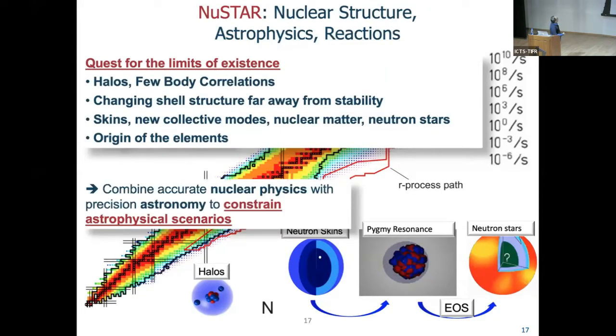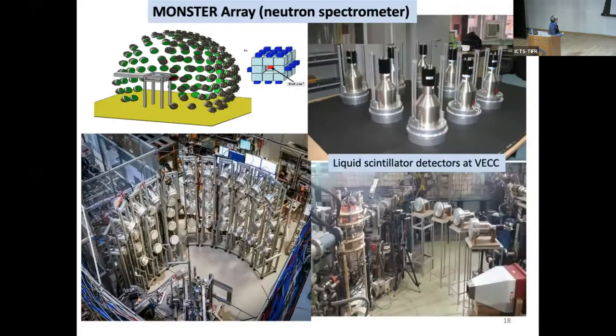These are the neutron detectors built at VECC for nuclear physics experiments, which will be shipped to Germany.